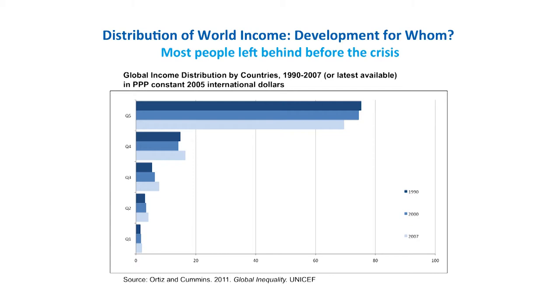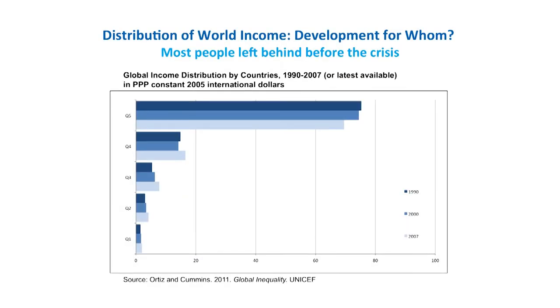It's the global income distribution by countries from 1990 to 2007, so it's an exceptionally long series. This is the most conservative assessment you can do. You have a very unequal distribution of income. What you have on top is the top income quintile — the richest 20% — and at the bottom the poorest 20%. The top income quintile has more than 70% of global income.